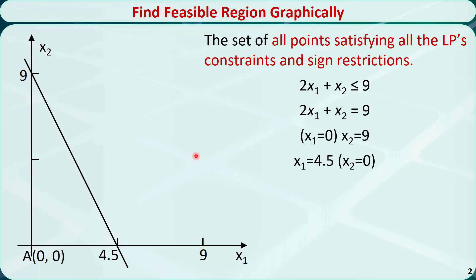We only need two points to draw this line. Let's set x1 to 0 and solve for x2 — we find x2 is equal to 9. Then let's set x2 to 0 and solve for x1 — we find x1 is equal to 4.5. This line passes through these two points.